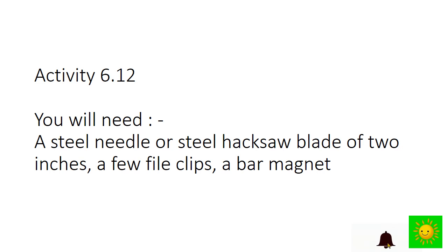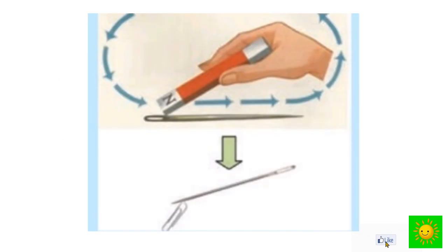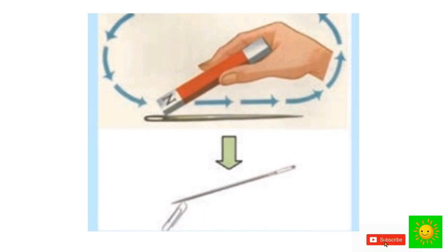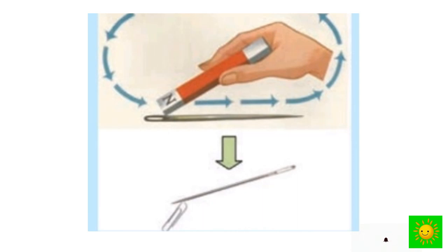The second activity is to observe the contact method. Bring the needle or blade close to the paper clips to check whether it has magnetic power. Place the needle horizontally on the table. Place one of the bar magnets on the needle and drag it along the same direction. Repeat the process several times, then bring the needle blade close to the paper clips and see what happens. It is clear that a permanent magnet can be made using the electrical method and the contact method.